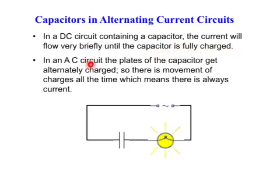In an AC circuit, the plates of the capacitor get alternately charged, so there is movement of charges all the time, which means there is always current, like this one here. This is an AC supply.